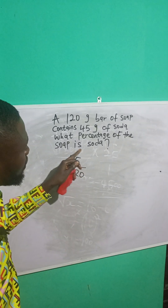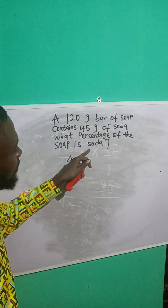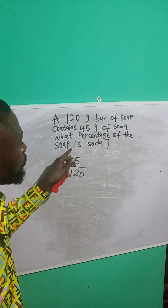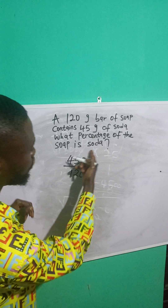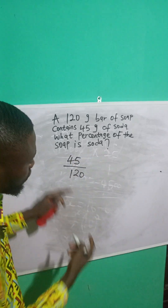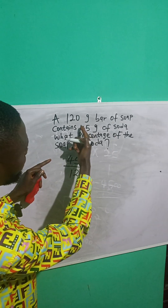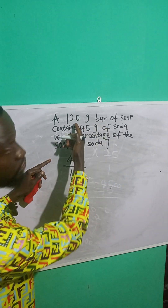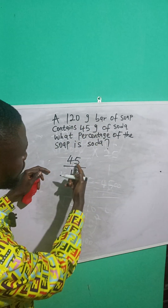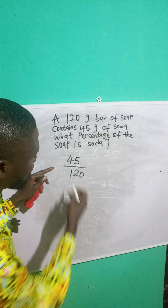Remember, we are looking for the percentage of soap that is soda. So let's get the fraction of the soda. Soda is 45, and the soap is 120. So 45 over 120.